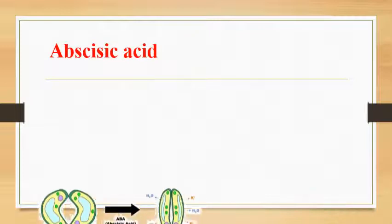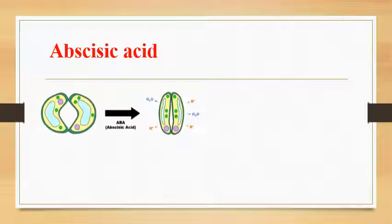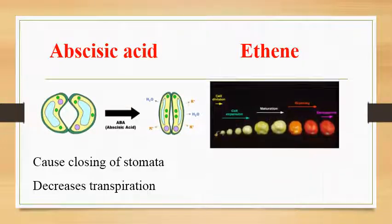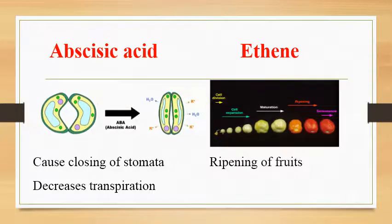Abscissic acid is a plant growth substance that causes closing of stomata when plant has shortage of water. So it decreases transpiration. Similarly, ethene is a simple organic compound produced in low amounts in plants. It is needed for ripening of fruits and to recover wounds and damaged plant parts by forming new tissues.